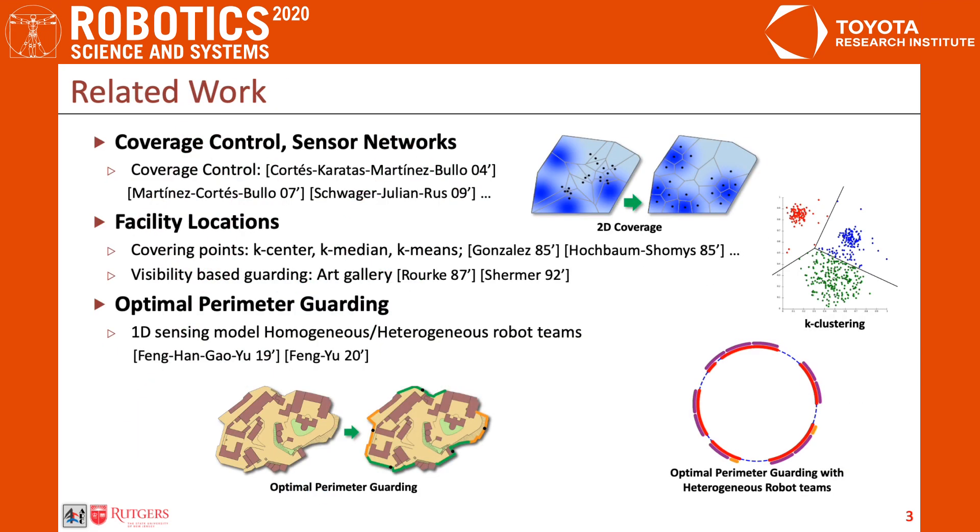This work builds on plenty of previous work on coverage control, sensor networks, and facility location problems. And it complements our previous optimal perimeter guarding work by studying region guarding beyond perimeter guarding, and applying 2D range sensing model instead of 1D sensing model.